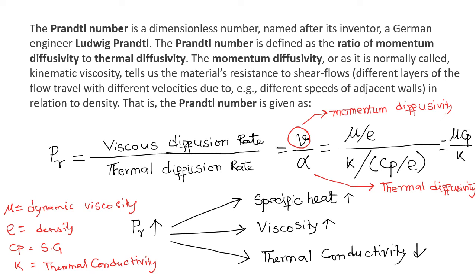With this, we can conclude that the Prandtl number is basically a dimensionless number. And it is named after its inventor, who is the German engineer Ludwig Prandtl. The Prandtl number is defined as the ratio of the momentum diffusivity to the thermal diffusivity. The momentum diffusivity or as it is normally called, the kinematic viscosity tells us the material resistance to the shear flow and different layers of the flow travel with the different velocities with respect to different speed of the adjacent layer in relation to the density.